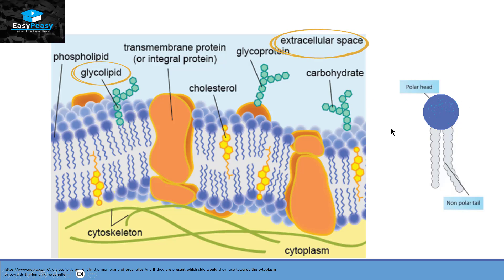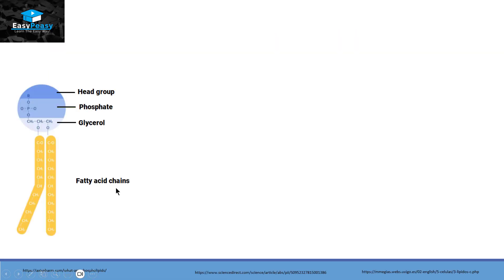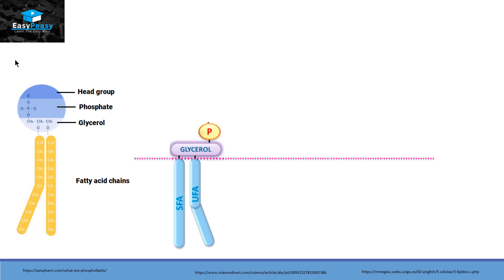Let's discuss this lipid structure in more detail. This lipid structure has fatty acid chains — shown in orange — and in the head region we have glycerol attached with a phosphate group, and this phosphate group is attached with the head group. The fatty acid chains can be saturated or unsaturated fatty acids, attached with glycerol, which is in turn attached with phosphate.